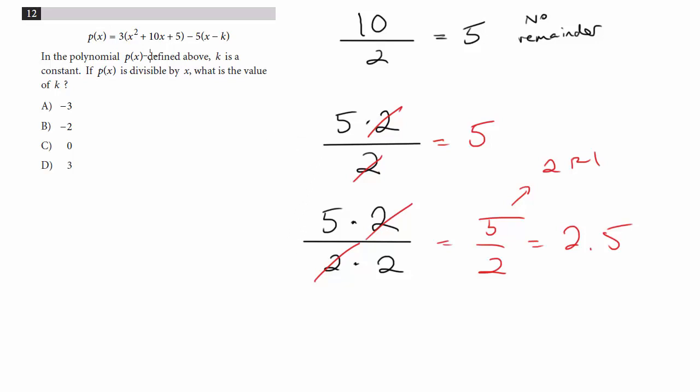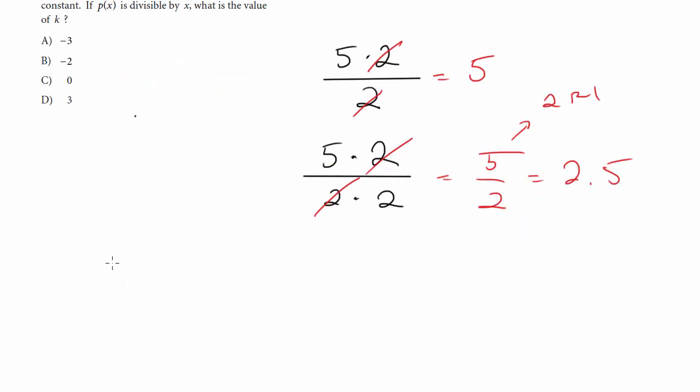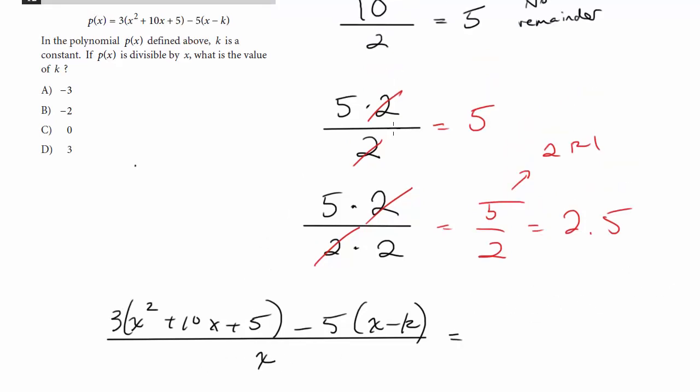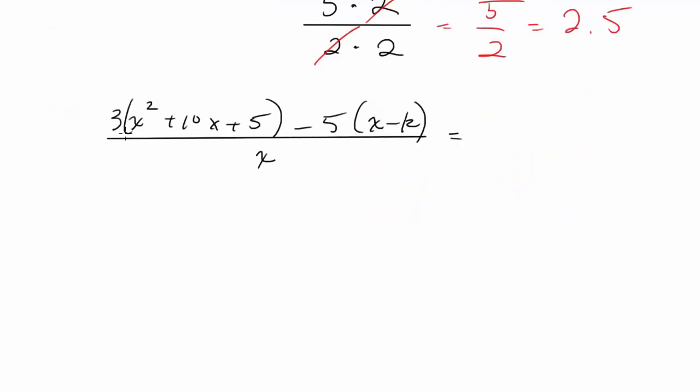So that's the idea of divisibility. We're going to take this factor right here, this polynomial, 3 times x squared plus 10x plus 5 minus 5 times (x minus k). And we want it to be divisible by x. That means we're going to take this whole thing, divide it by x, and at the end we're going to want to get no remainders, no crazy fractions. We want this x, if you think about it, as a factor to divide into all the terms.